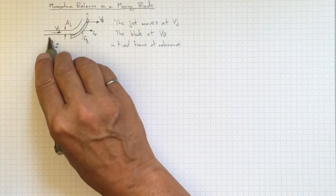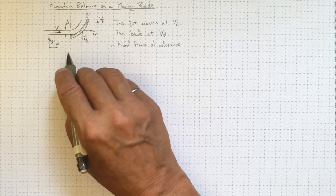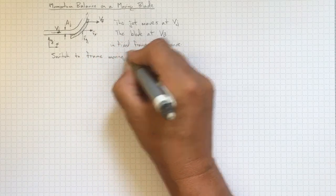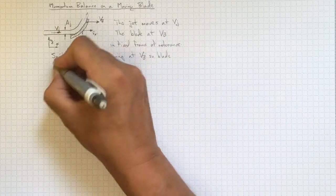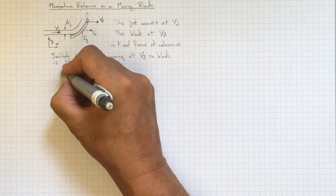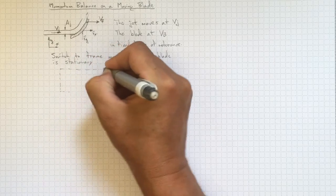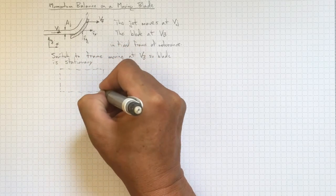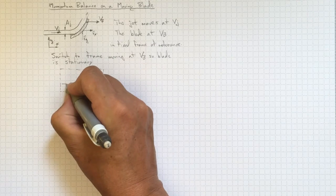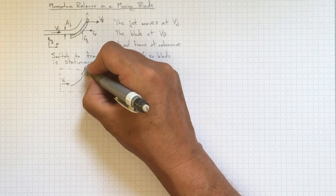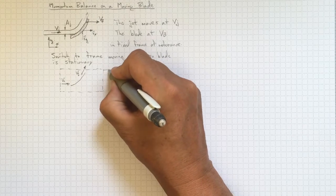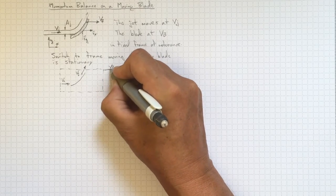Our fixed frame of reference has axes Y and X, and we're going to switch to a frame of reference that's moving with the blade so that the blade is stationary. If we draw our little control volume like this, it's still got the same shaped blade inside it. All of the angles and arrangements are the same, and the forces are going to be the same. We've got a flow coming in at V1 and going out at V2, both relative to the control volume, which is moving at Vb.